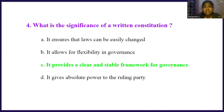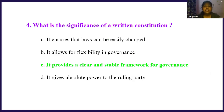What is the significance of a written constitution? Option A, it ensures that laws can be easily changed. Option B, it allows for flexibility in governance. Option C, it provides a clear and stable framework for governance. Option D, it gives absolute power to the ruling party. The right answer is option C, it provides a clear and stable framework for governance. The main importance of a written constitution is to give a stable framework for governance.